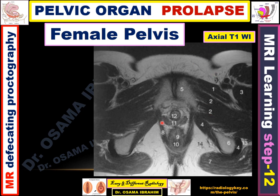In the female pelvis, as we see here in the axial T1-weighted MRI image, the subcutaneous fat appears bright. This is the anus surrounded by the internal and external sphincters. This is the levator ani muscle. Anterior to the anus is the perineal body and vagina. The most anterior structures just behind the symphysis pubis are the urethra and urethral sphincters — the external urethral sphincter can be seen here. This is the pubic bone, and the ischial tuberosity appears here. The internal obturator muscle rotates around the ischial tuberosity.